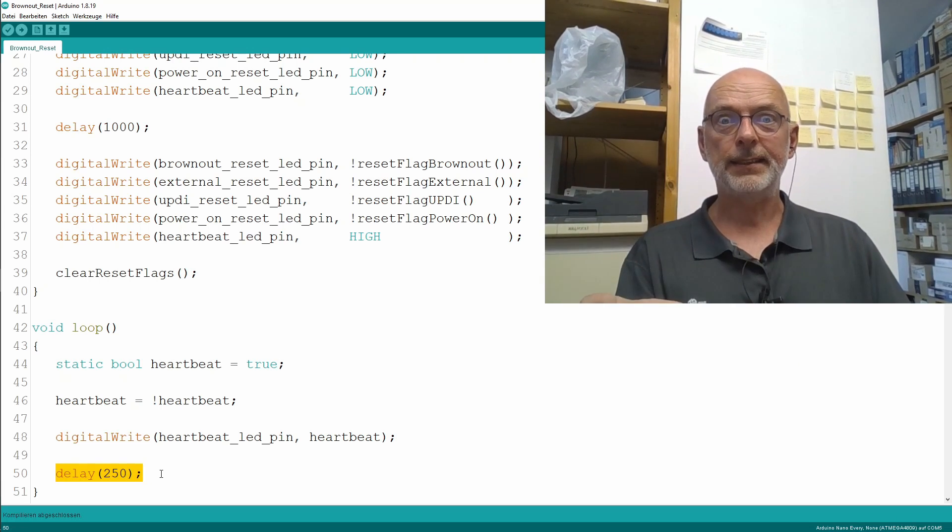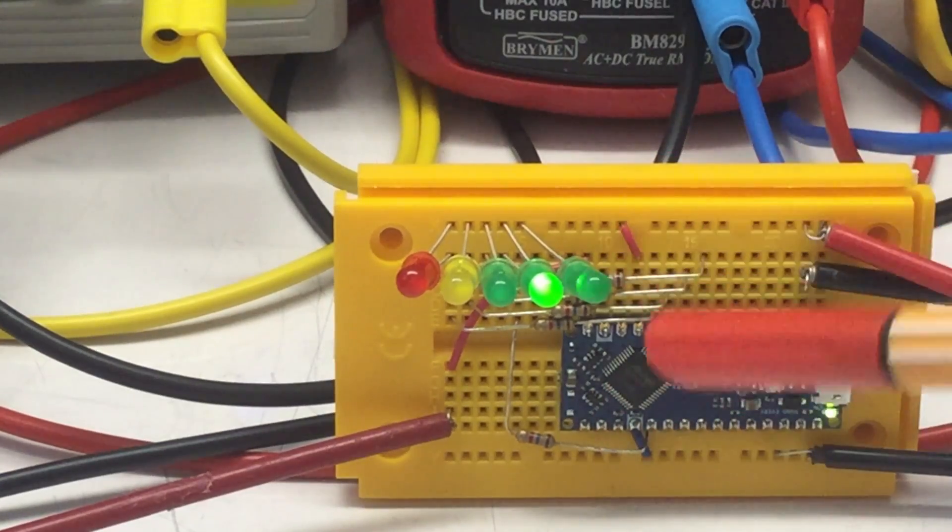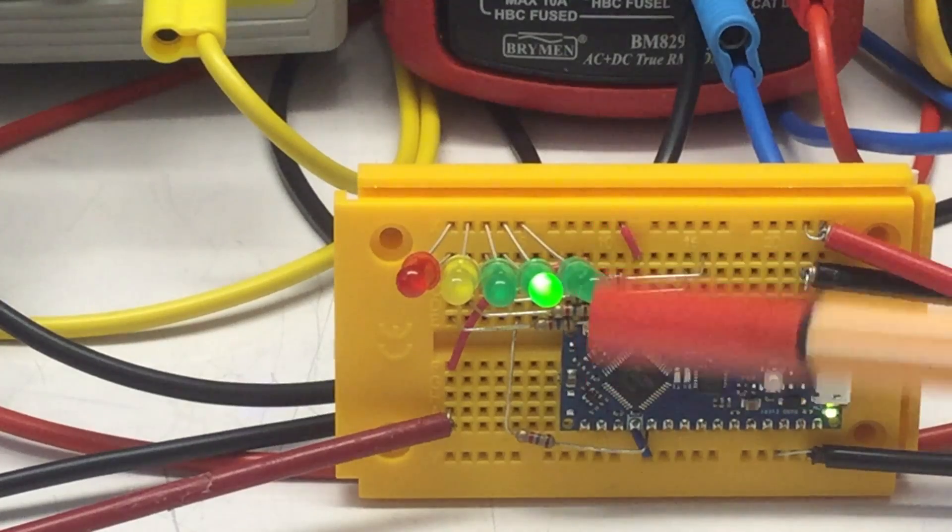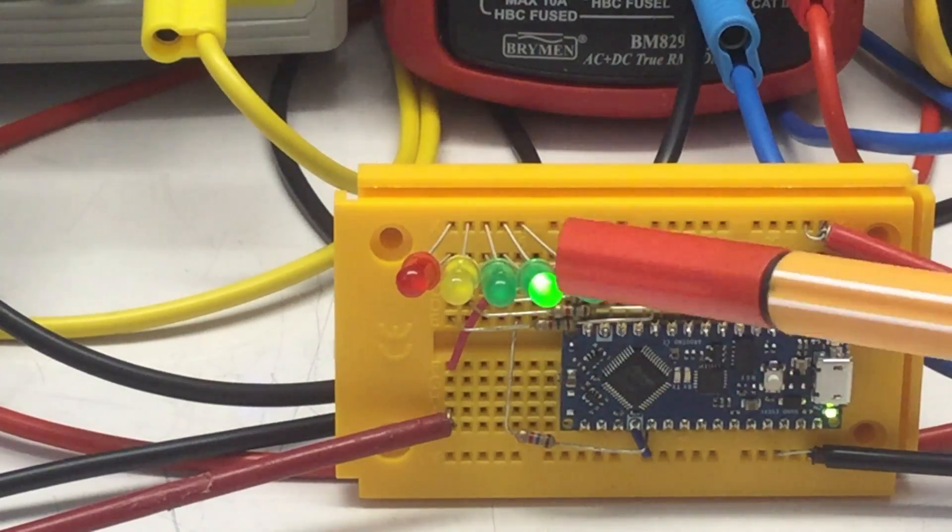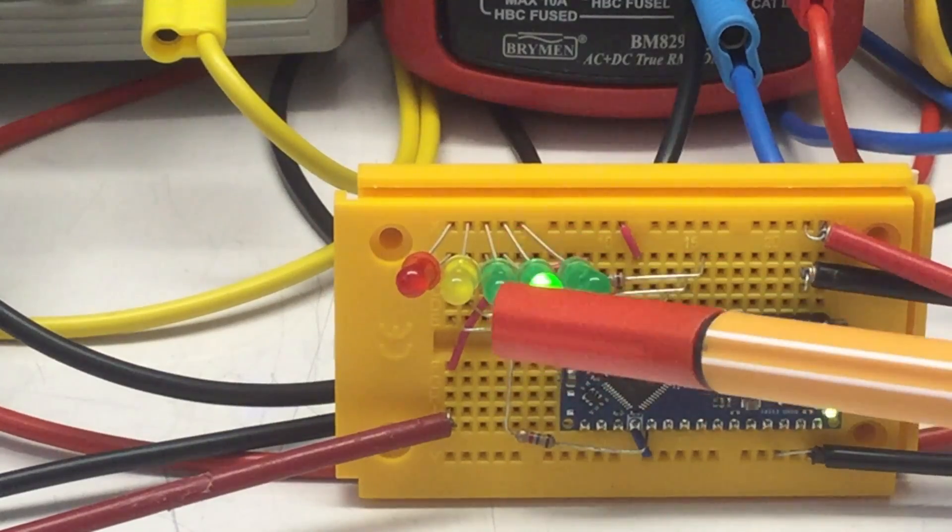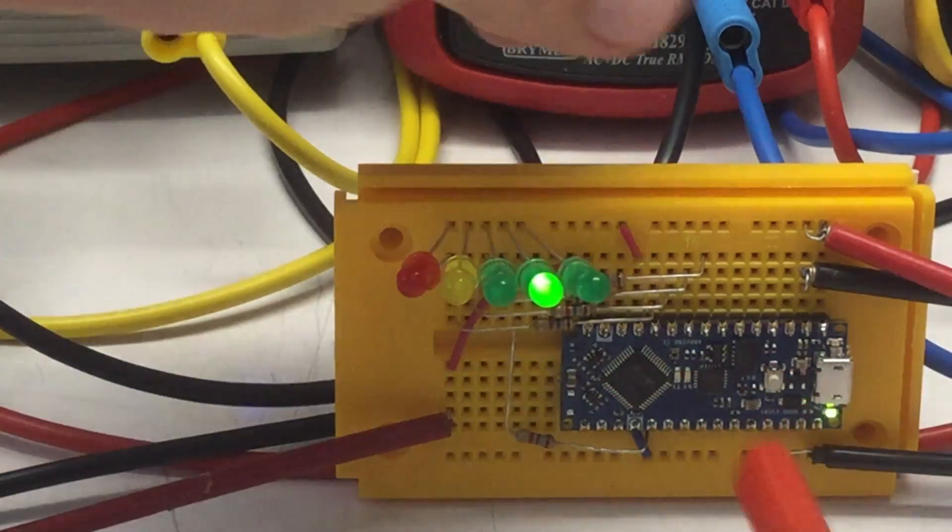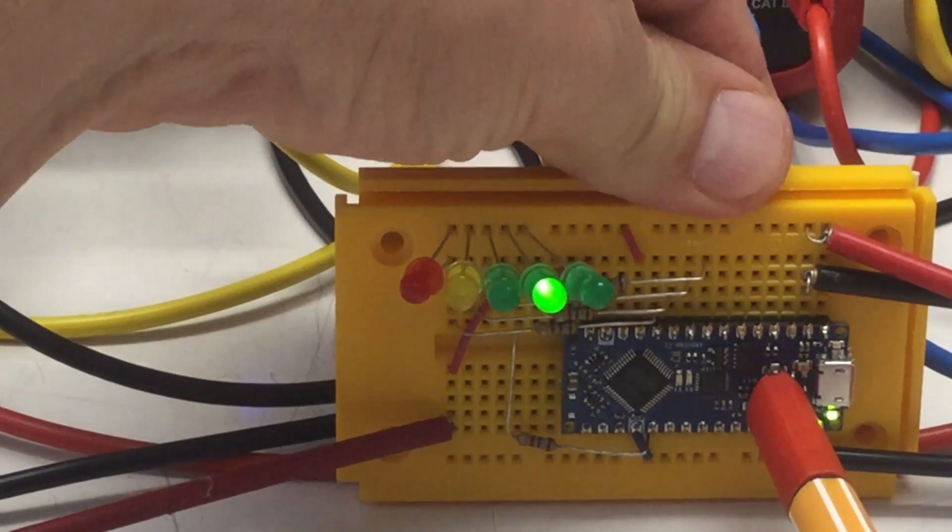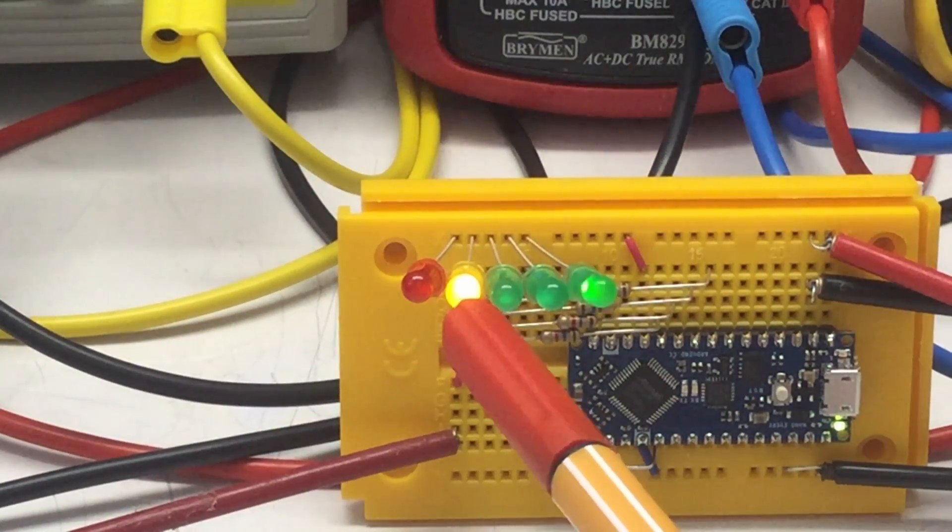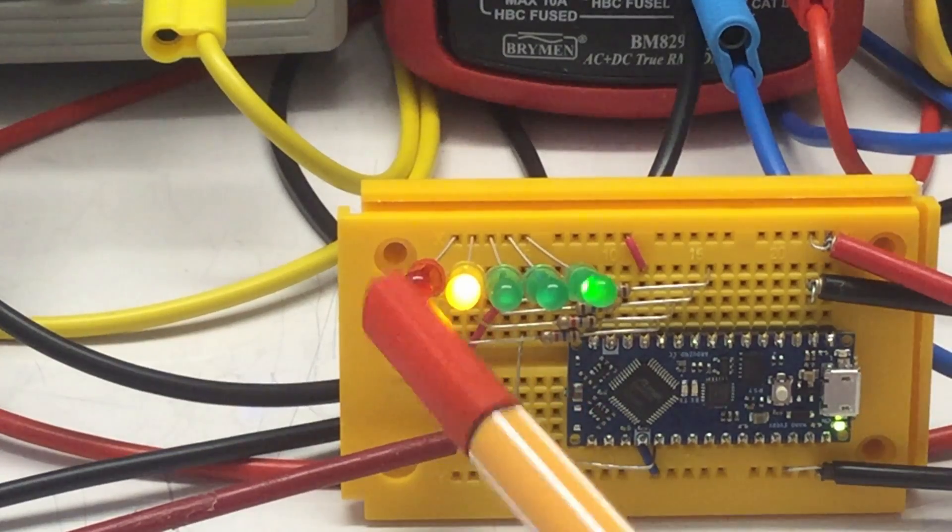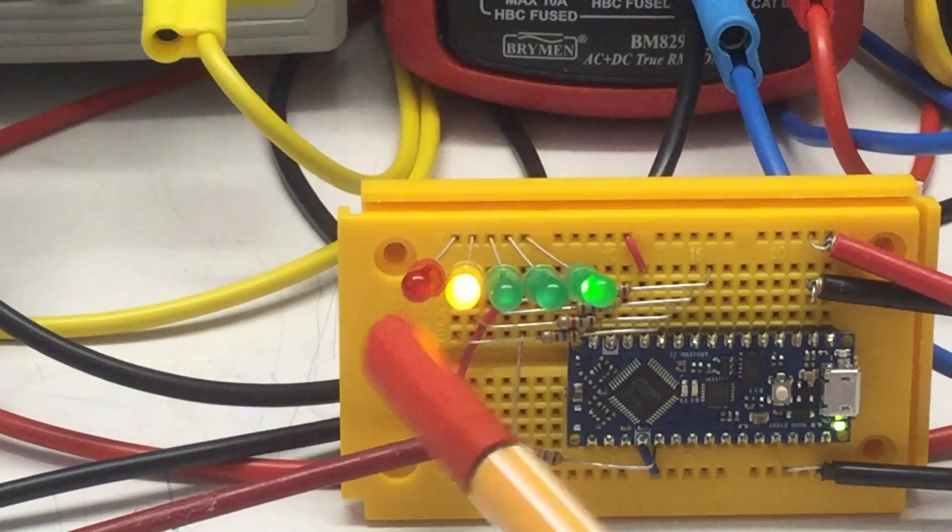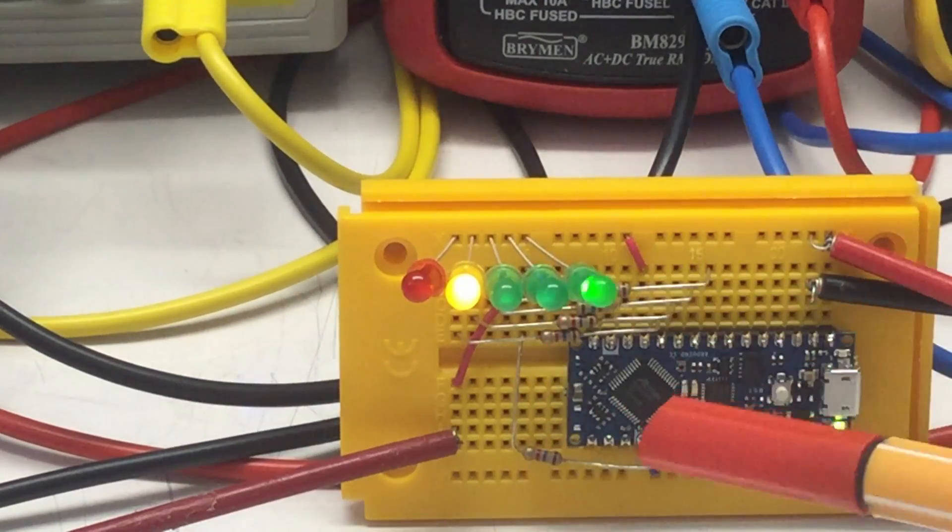That's it. Just so you know which LED is which when looking at the video, the blinking one is obviously the heartbeat LED. Then that's the power-on reset LED, that's the UPDI reset LED, that's the hardware reset LED. If you don't believe me, we can do a hardware reset. Okay, hardware reset LED. And the last one, the red one, that's actually the brownout reset LED if we see a brownout reset.